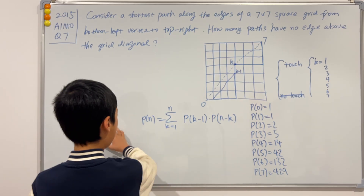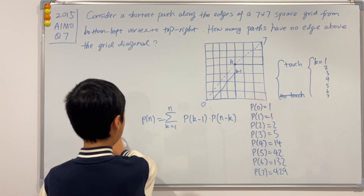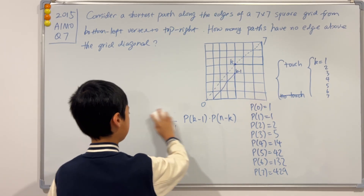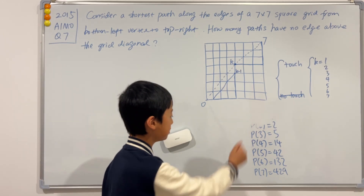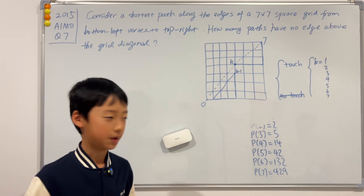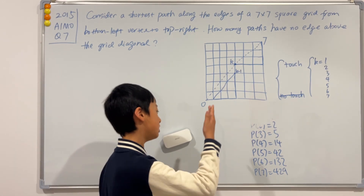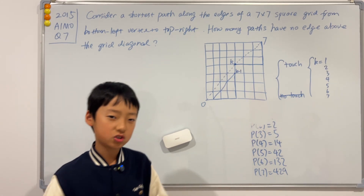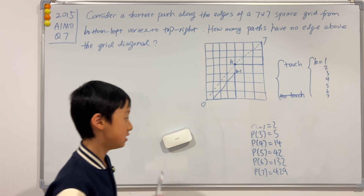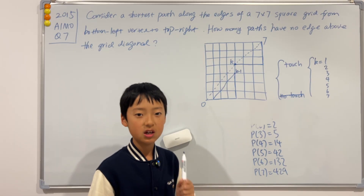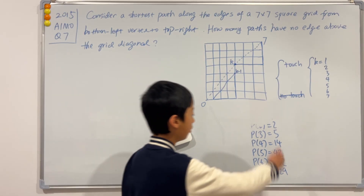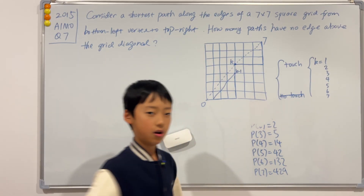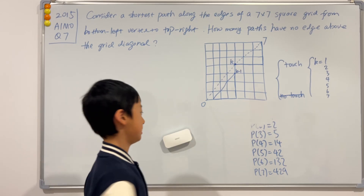Now we're up to the third method. These numbers are actually a derivation of the Catalan numbers — all of the values p(0) through p(7) are Catalan numbers.